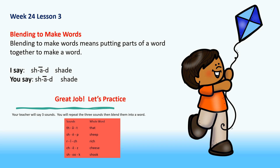Blending to make words means putting parts of a word together to make a word. Sh-a-d. Shade. Do you hear the parts of the word shade? Sh-a-d. You try it. Repeat after me. Sh-a-d. Shade. Very good.